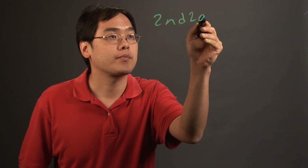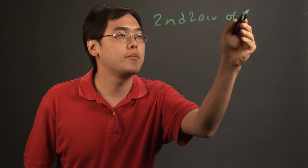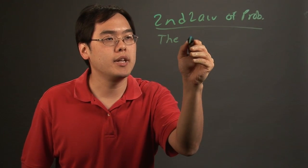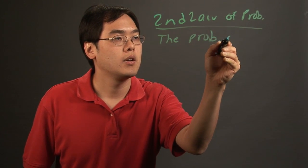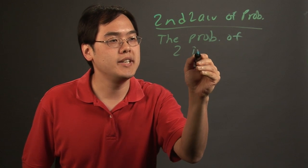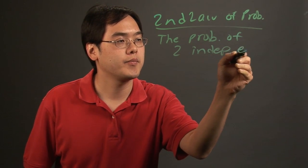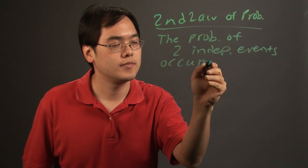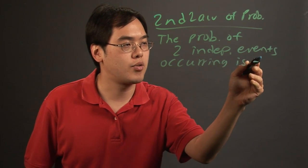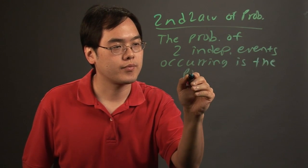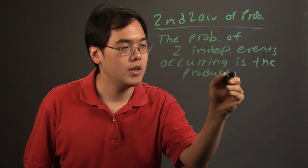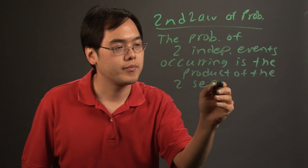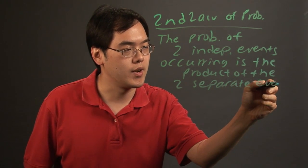The second law of probability discusses this idea that the probability of two independent events occurring is the product of the two separate events occurring.